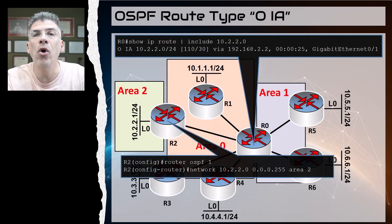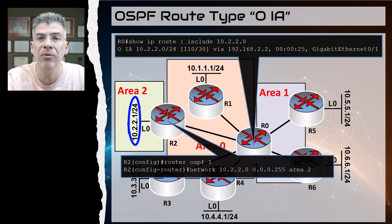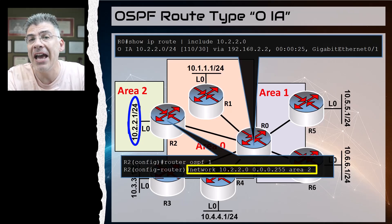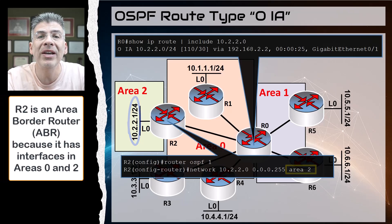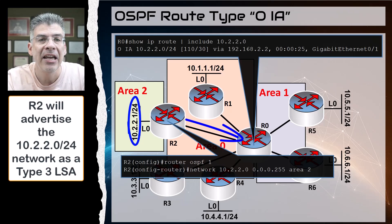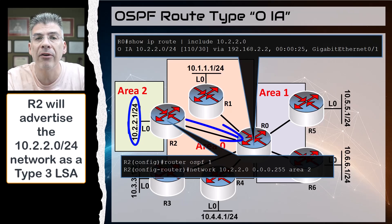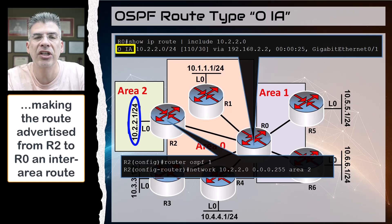Next we look at the OIA route type, or the OSPF inter-area route type. In R2 we have the 10.2.2.0/24 network assigned to the loopback 0 interface. This command causes this network to be advertised in OSPF and indicates that loopback 0 belongs to area 2. Since R2 is an ABR, it will advertise this route to R0 in a type 3 LSA — in other words, as a route that comes from area 2. Thus it is an inter-area route and has the indicator OIA.